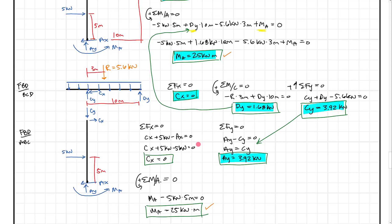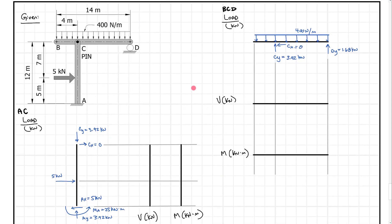Scrolling down, we can see we have two members: member BCD and member AC. I just copied the forces from the previous video onto each member. So now we have forces and reactions. When we do our shear and moment diagrams, we have to go ahead and set our local axes.